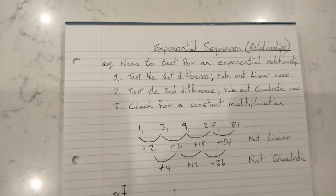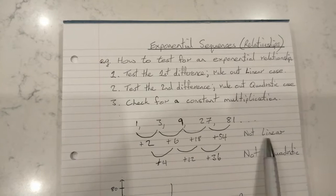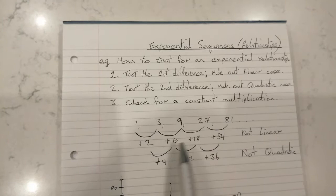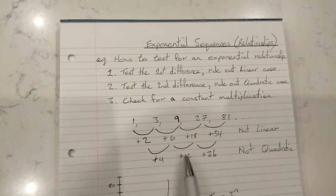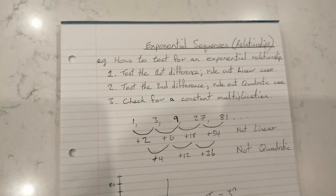If the second difference wasn't constant, we'd say it's definitely not quadratic. And at that stage then we could check to see if it was exponential. So here I've just shown you an example of an exponential sequence. Check the first lot: not linear, these are not the same. Check the second differences: not quadratic, because these are not the same.